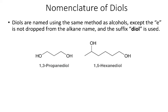First, a note on the nomenclature of diols. A diol, as you may have guessed, is di-two-ols - we have two OH groups in the same compound. We name them using the same methodology as alcohols, except we don't drop the E from the alkane name, and the suffix is diol. So this compound has three carbons - it would be 1,3-propanediol, or this would be 1,5-hexanediol.